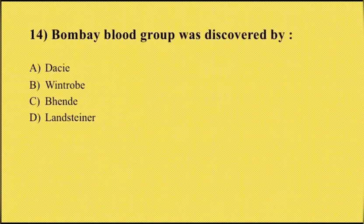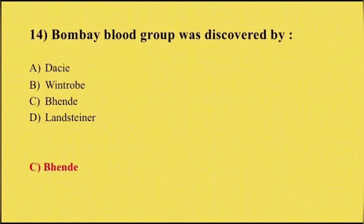Fourteenth question: Bombay blood group was discovered by option A Dac, option B Wintrobe, option C Bhende, option D Landsteiner. The correct answer is option C, Bhende. Landsteiner discovered the ABO blood group system.